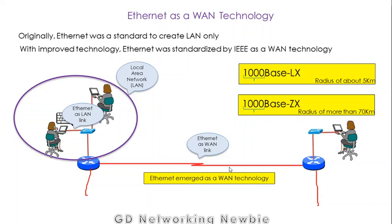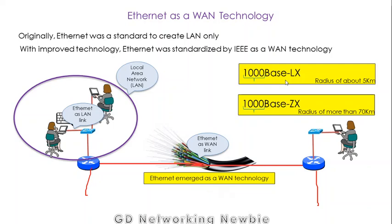The '1000' in these standards shows that they support 1000 megabits per second. The 'X' indicates that to establish a wide area network using this standard, optical fiber is used. So by using fiber links we can create a wide area link, or WAN link, between the nodes.